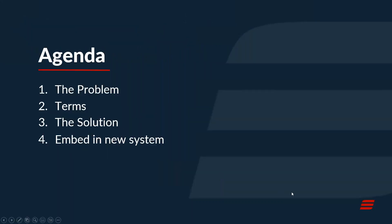Today we'll have a fairly short agenda. I want to talk about what is the problem with accessing our historical data — when you say at some point I am moving on from Dynamics GP, how do I get at my data? We'll cover some terms, dig into the solution for how we access that history, and as a bonus, we'll talk about whatever system you're going to, how we can make that data available not only inside PopDoc but in those other systems as well.